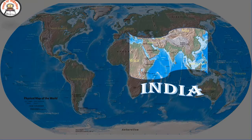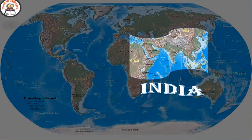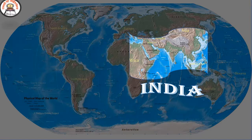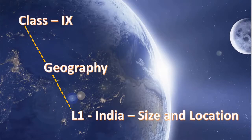India is the largest country in South Asia. It's the seventh largest country on earth and the second most populous country after China. India is the biggest democracy in the world. After independence, India has made rapid progress in every field — science, information technology, agriculture, industry, commerce, and more. India has also contributed significantly to the making of world history.